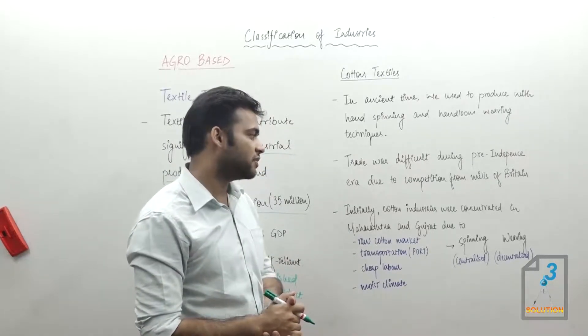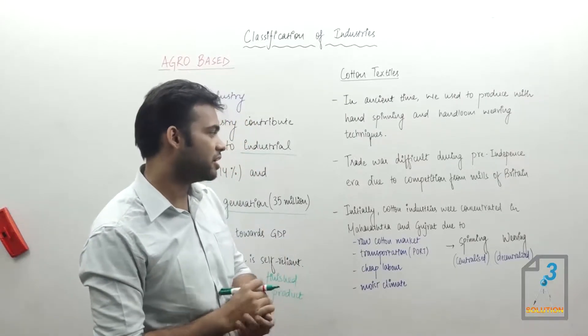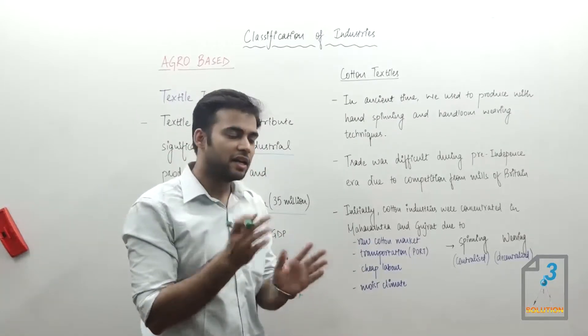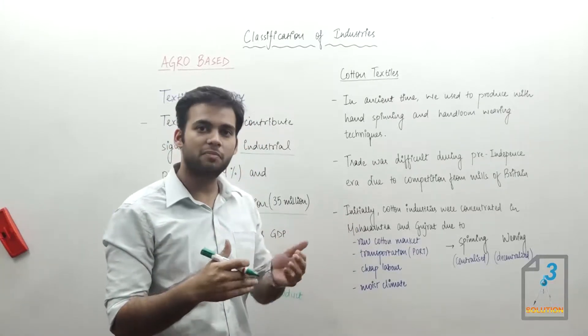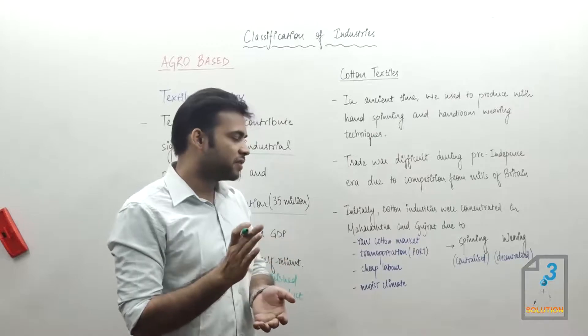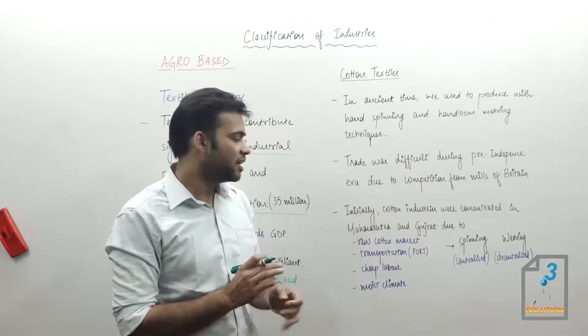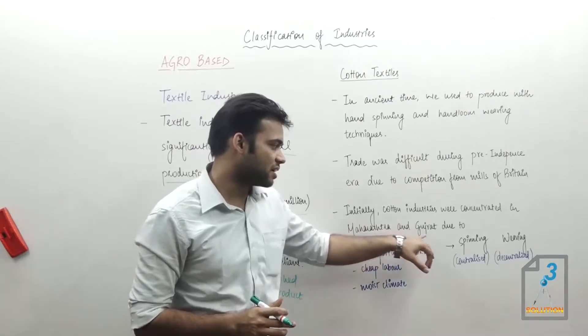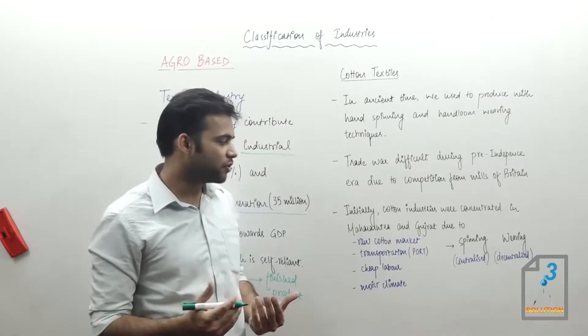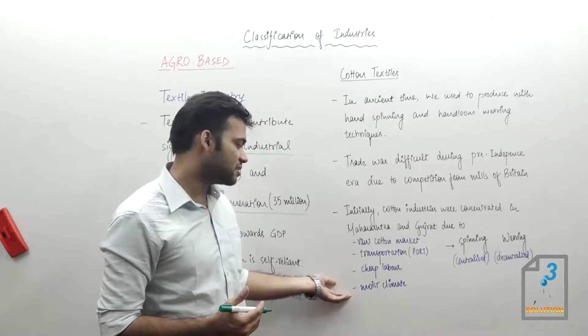Initially, cotton industries were constructed in Maharashtra and Gujarat. This is basically the post-independence era when we were done with the British. We established our cotton textile industries in Maharashtra and Gujarat. There were few reasons why cotton textile industry went well in these regions.